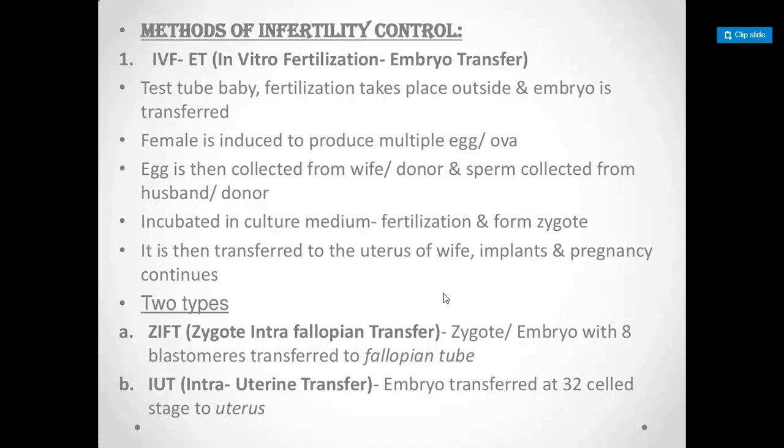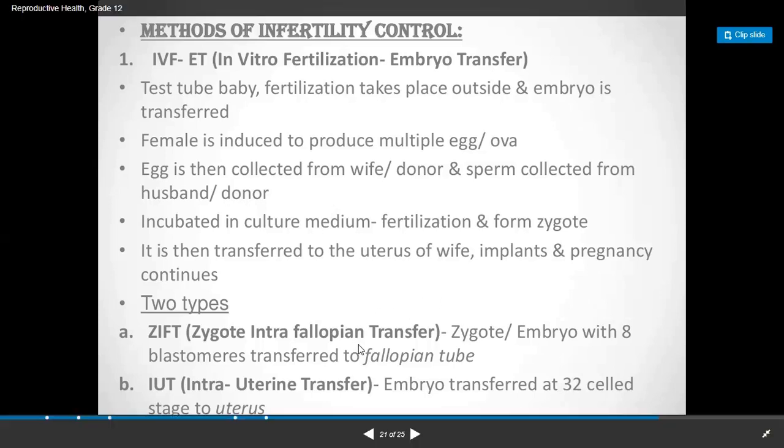There are two types of assisted reproductive techniques: Zygote Intra-Fallopian Transfer, or ZIFT, and Intra-Uterine Transfer, or IUT. It is done in these two ways.